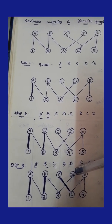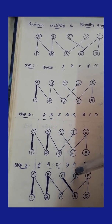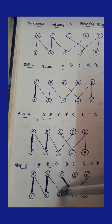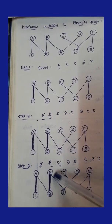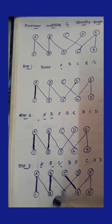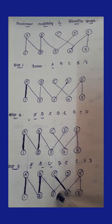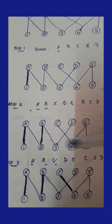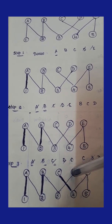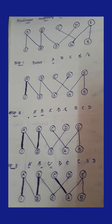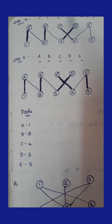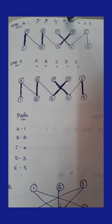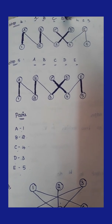Next we visit D. D is connected only with vertex number 3, and 3 has connectivity with B. However, B already has a matching pair with 2, so that edge is not considered. There is only one edge connected with D, which is 3, so D is perfectly matched with 3. We put the shaded line over D and 3. D is also struck out from the queue.